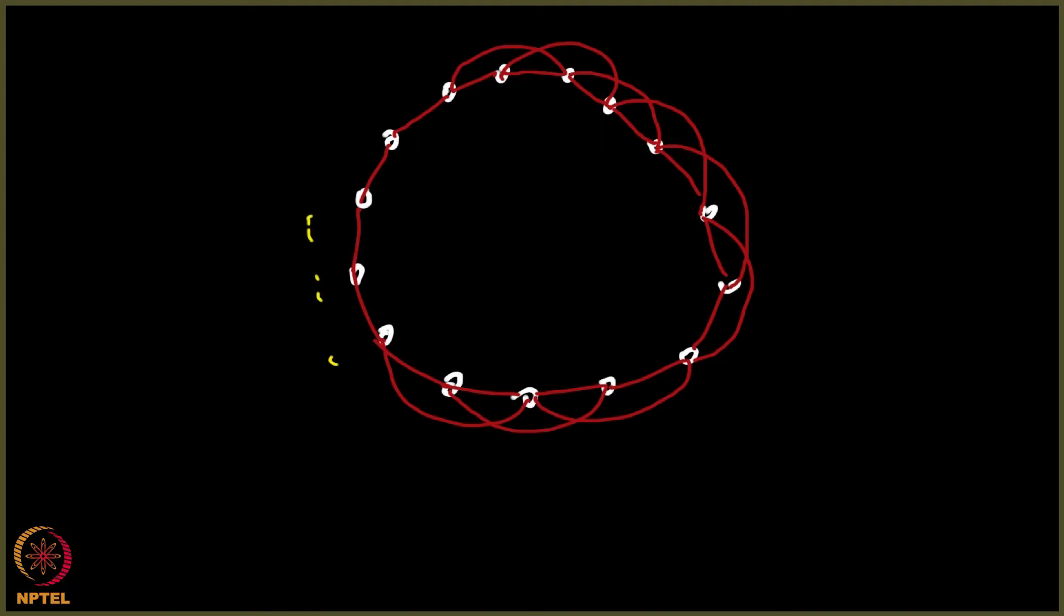So now, what the Watts and Strogatz model suggested is that you start with this, which is very similar to a grid that we saw, right? Start with a grid where you know people who are geographically close to you.